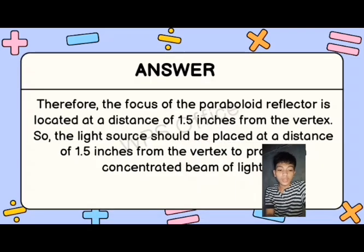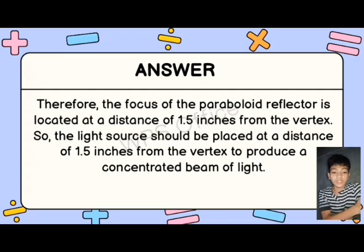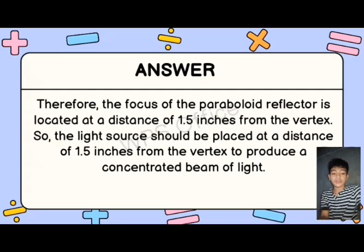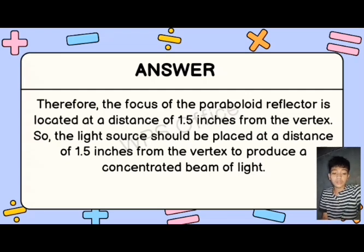The focus of the paraboloid reflector is located at a distance of 1.5 inches from the vertex. Therefore, the light source should be placed at a distance of 1.5 inches from the vertex to produce a concentrated beam of light.